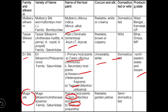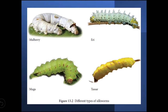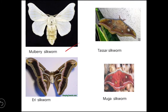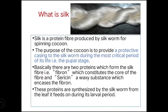The muga silkworm's primary hosts are Som and Soalu plants. Muga is also reelable and the cocoon color is golden yellow. They are semi-domesticated, and Assam has a monopoly on muga silk. The four silk types — mulberry, eri, muga, and tasar — each have distinct moth and larval forms.